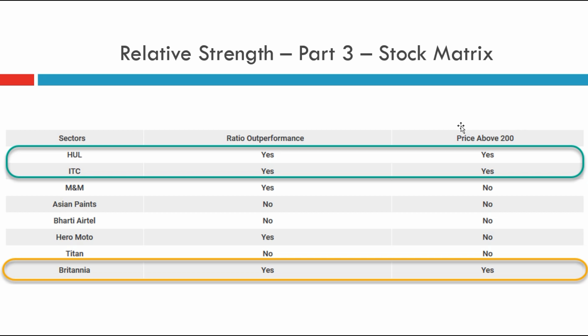The next stock is Titan Industries — price has not done much, the relative strength line is flat, and there is a structure of lower highs and lower lows forming, so for this period this stock is in a void. Britannia Industries, when compared to the last four or five stocks, is obviously doing much better — price is trading above the 200-day moving average and the relative strength line is forming higher highs and higher lows. But still, when you compare it with HUL and ITC, it is very clear which stock is doing much better and which one we should target.